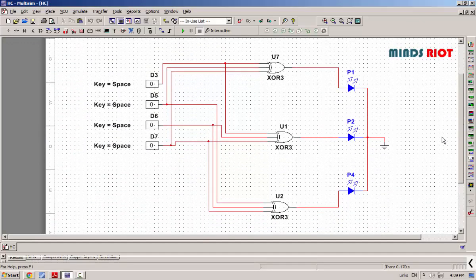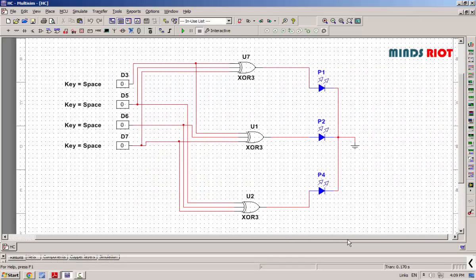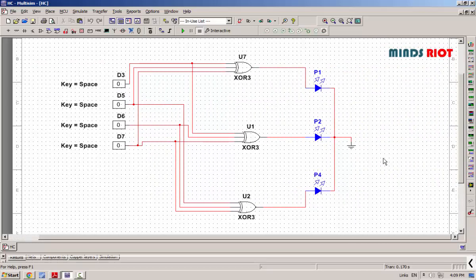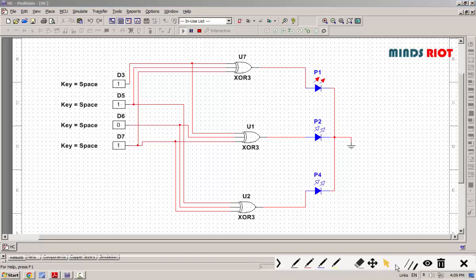For example, we are doing it for 1011. 1 is our MSB bit, 0 next to MSB, then 1011. D3 is your LSB bit and D7 is your MSB bit.